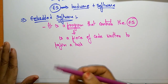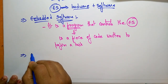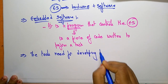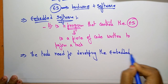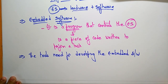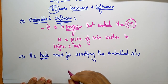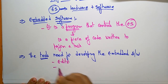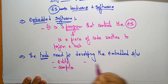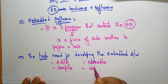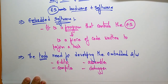Now let's see the tools that are needed to develop this embedded software. The tools required to develop embedded software include: an editor to write the programs, a compiler to compile the programs, an assembler to convert the high-level language program into assembly-level language, and a debugger to execute the programs.